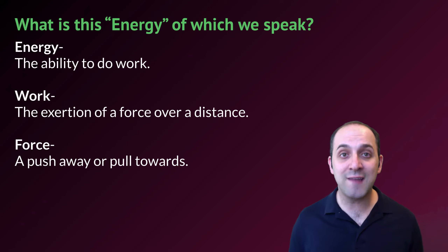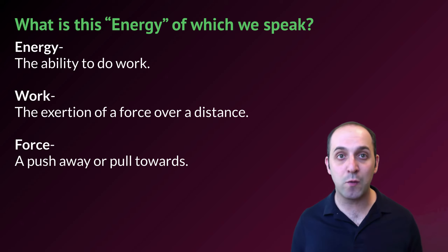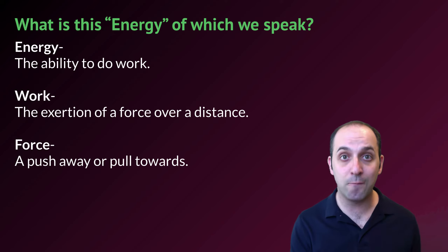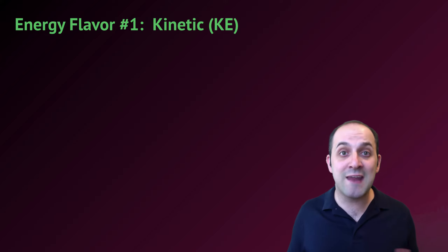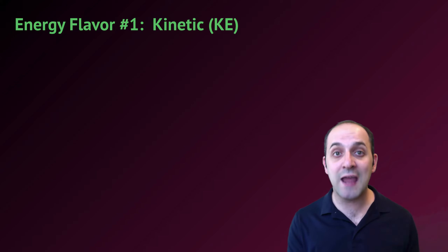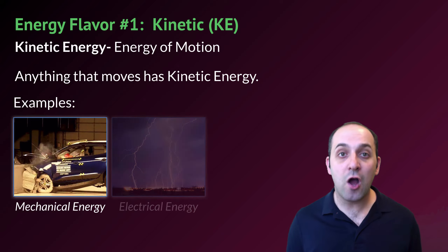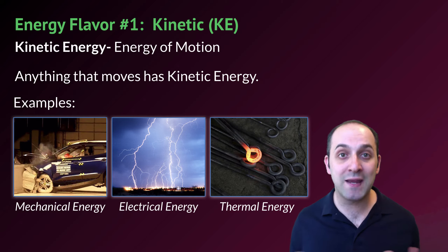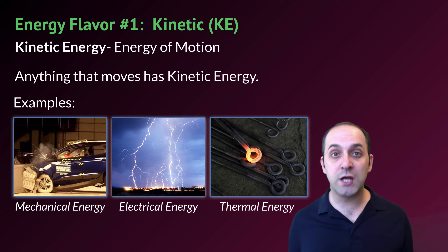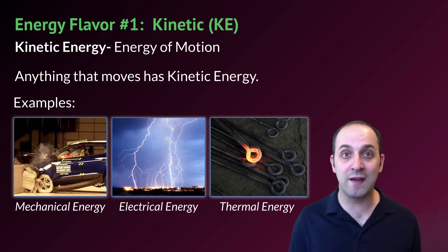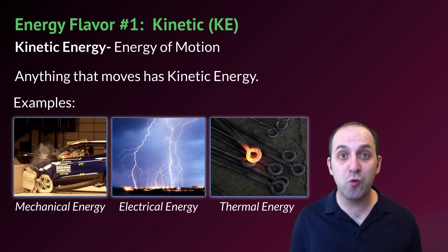A lot of times, of course, it's not going to be the big macro kinds of things that you think about when you think about pushing and pulling. Here in chemistry, a lot of times it's going to be at the atomic scale. Energy comes in two major flavors: kinetic energy and potential energy. Kinetic energy, or KE, is defined as the energy of motion — anything that's moving has kinetic energy. A car hitting a wall is a great example of mechanical energy, which is when large things are moving through space. Electrical energy comes from the movement of electrons, either through wires or in the case of a lightning strike.